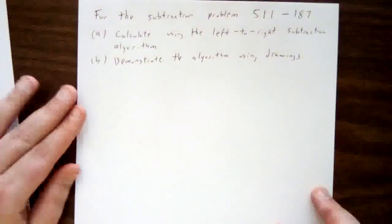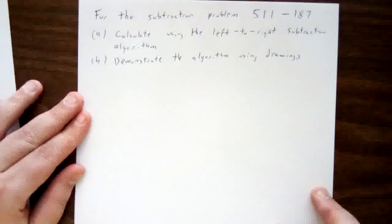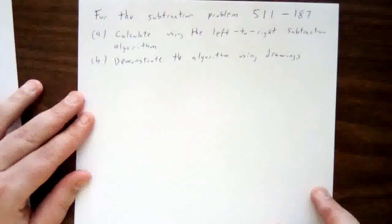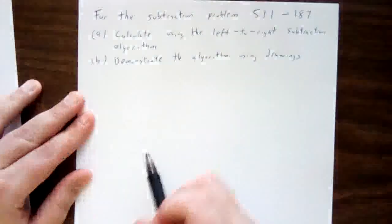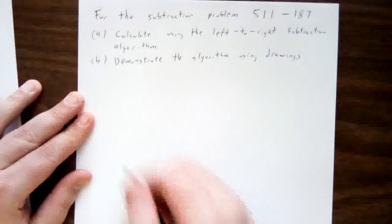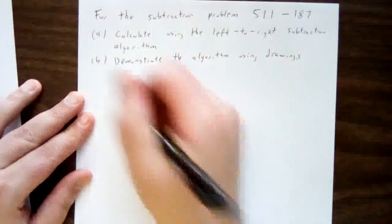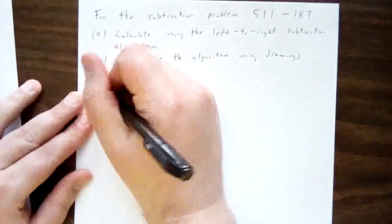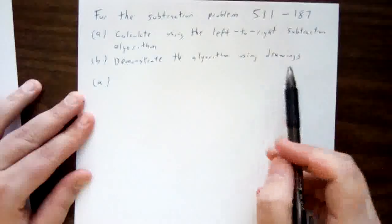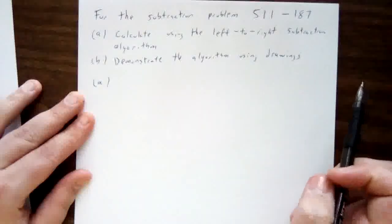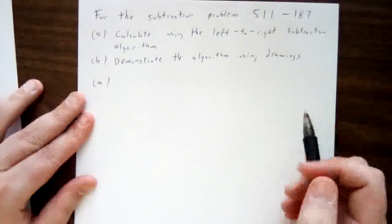I'm going to do two things in this video. I'm going to first begin by calculating 511 minus 187 using the left-to-right subtraction algorithm, and then I'm going to demonstrate the same problem with drawings, demonstrating that left-to-right subtraction algorithm.